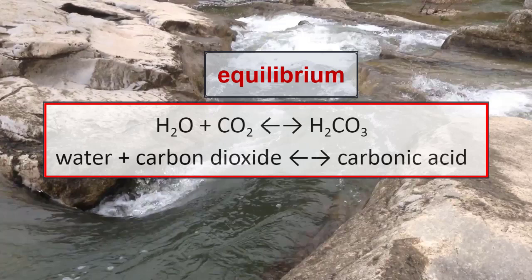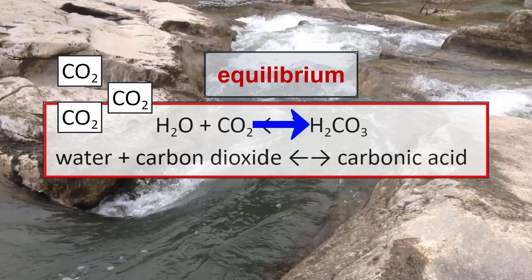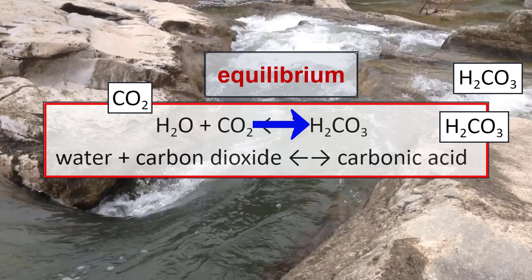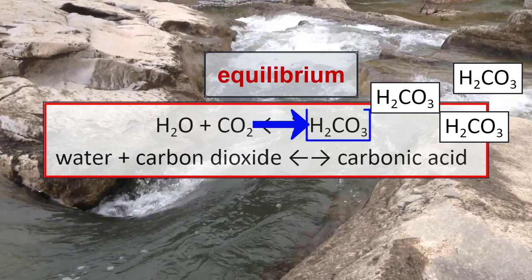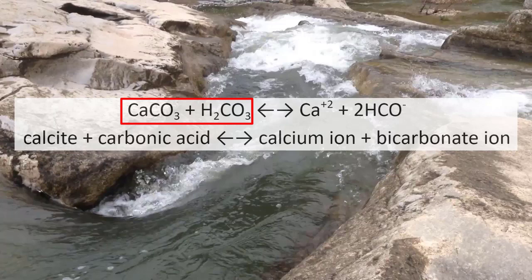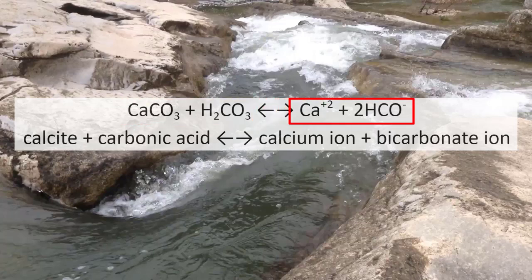For example, the more carbon dioxide in the environment, the more that drives the reaction to the right to remove the carbon dioxide and produce more carbonic acid. When the solid mineral calcite gets in contact with carbonic acid, the bonds in the calcite mineral are broken, turning it into calcium and bicarbonate ions that are now dissolved ions in water.